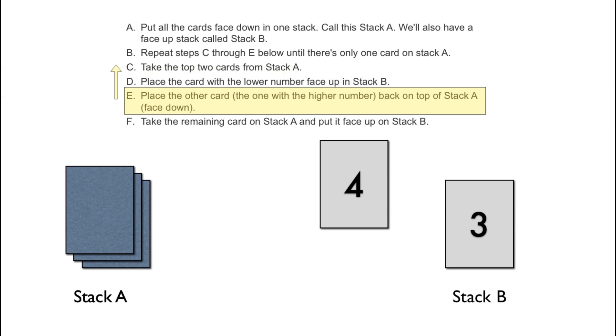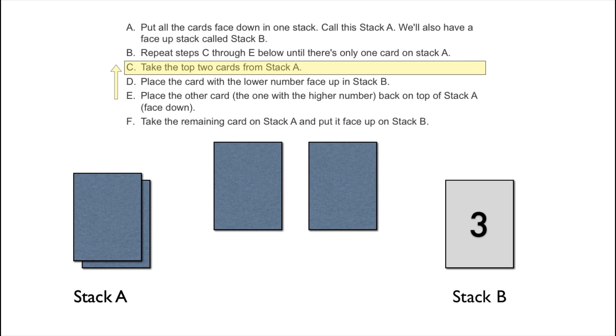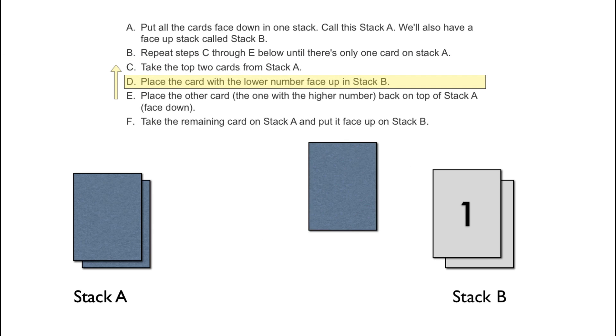We could then place the other card, the one with the higher number, back on top of Stack A face down. We jump back up to step C, take the top two cards, turn them over so we can compare them, place the card with the lower number face up on Stack B, get the other one, turn it over, place it back on Stack A.